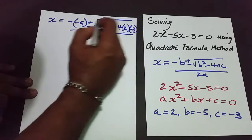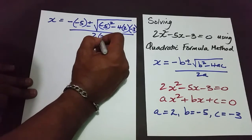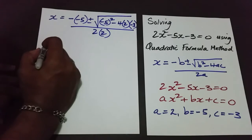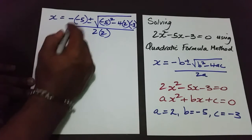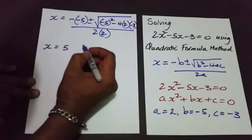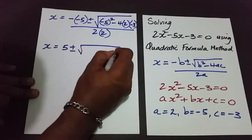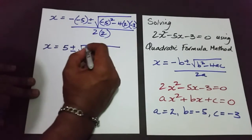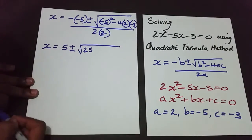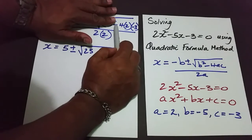Divided by 2 times a, which is 2 times 2. So we're going to take our time and work this very carefully. x is equal to: two negatives make positive 5, plus or minus the square root of negative 5 all squared is 25.